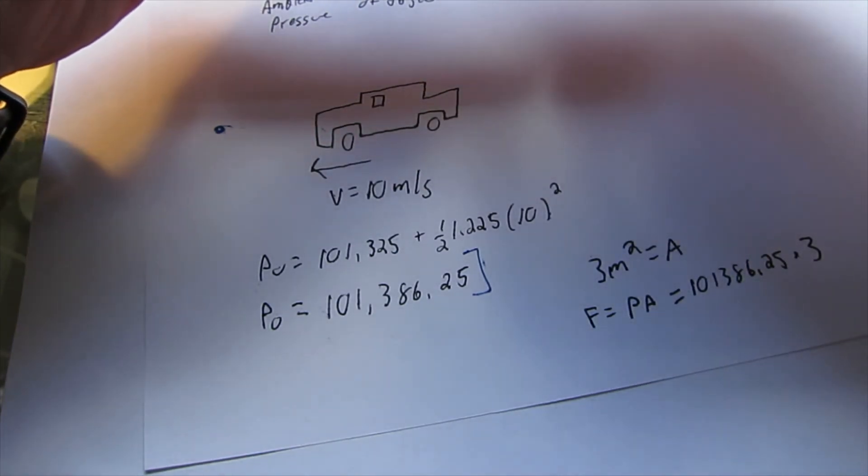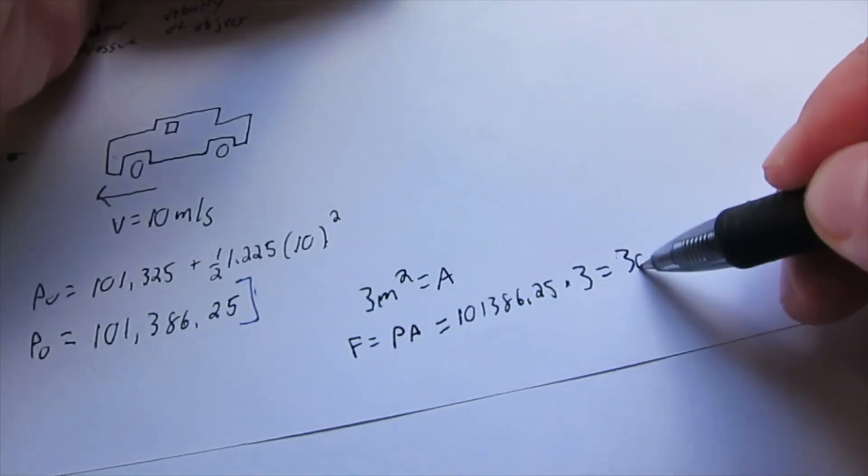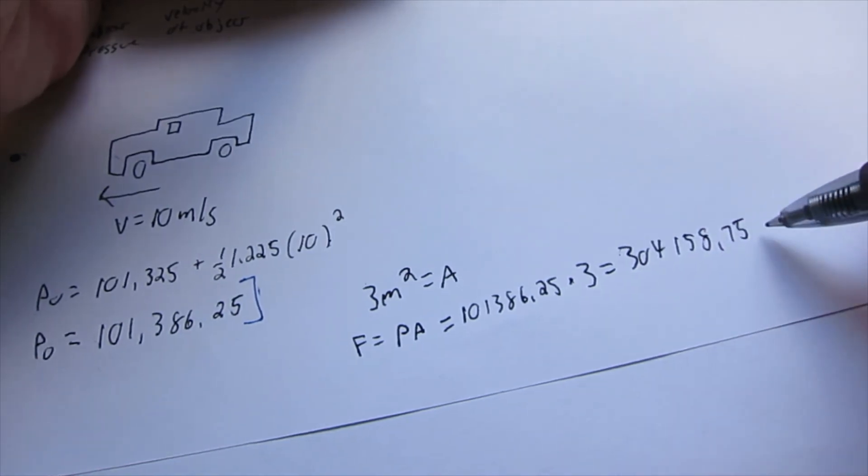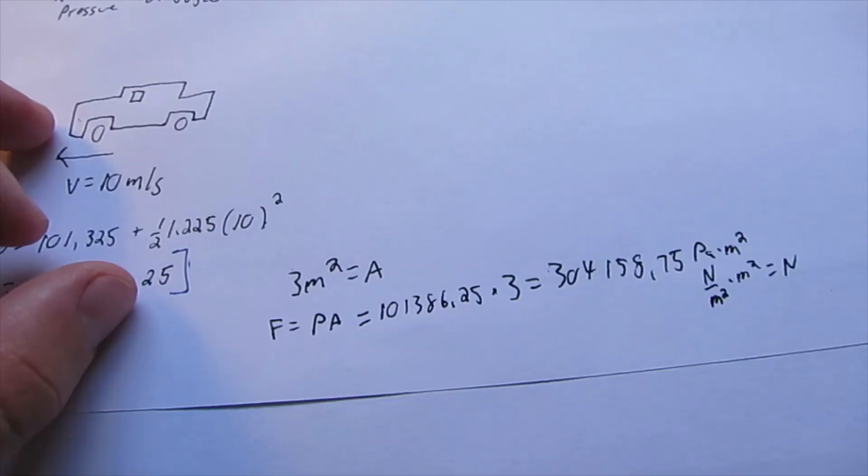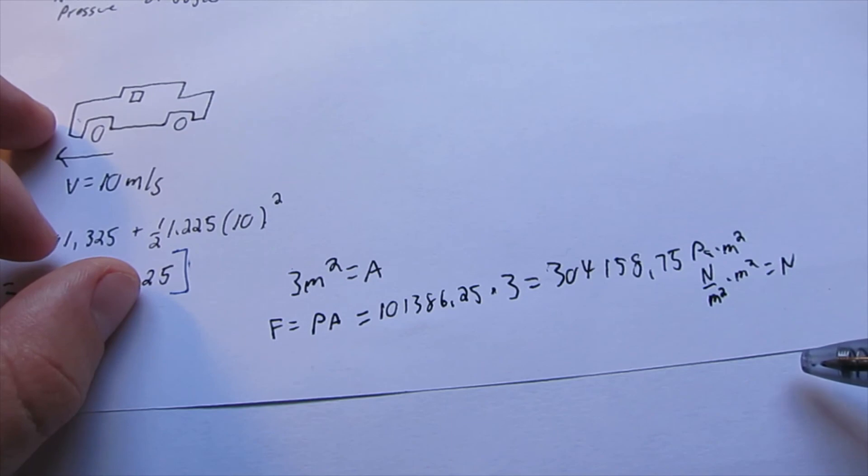That equals 304,158.75 pascals times meter squared. Since a pascal is a newton per meter squared, the meter squared terms cancel out, and we're just left with newtons.